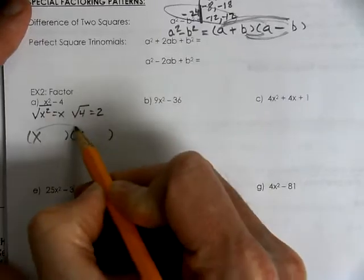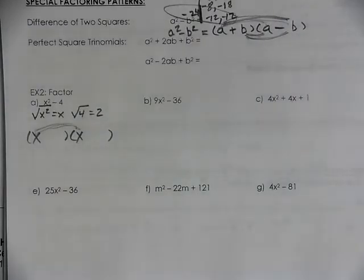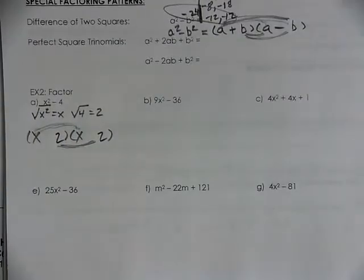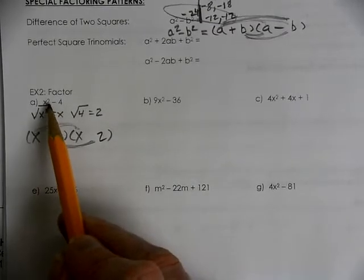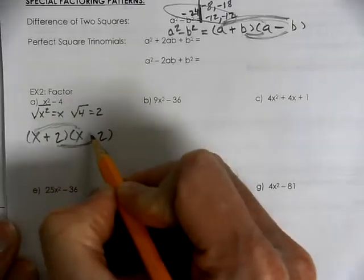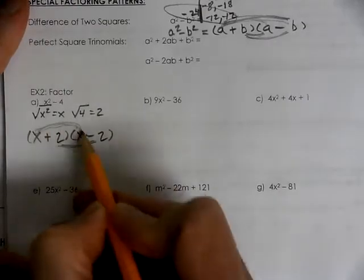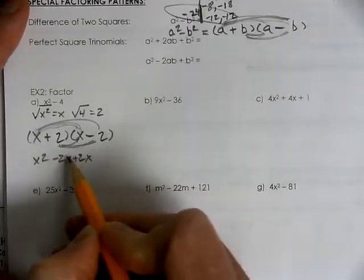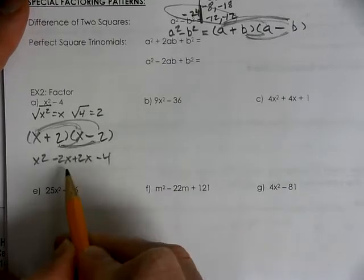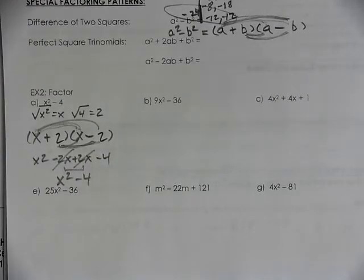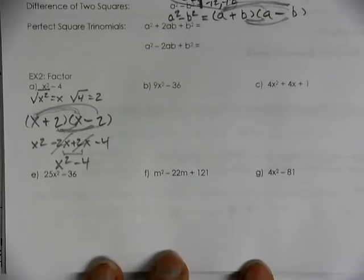So, X times X is making the X squared. The 2 times 2 is making the 4. But, if you just had signs in there, if we had them both positive or both negative, we'd get a B term. But, for us not to have a B term, these have to be opposites of each other. So, if we checked our work, X squared minus 2X, positive 2X, and negative 4, this is going to reduce and cross those 2X's out because one's positive and one's negative and you get what you started with, X squared minus 4.